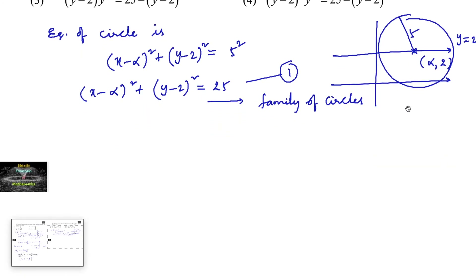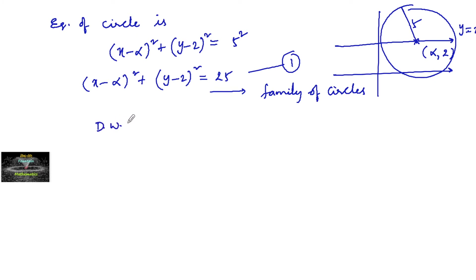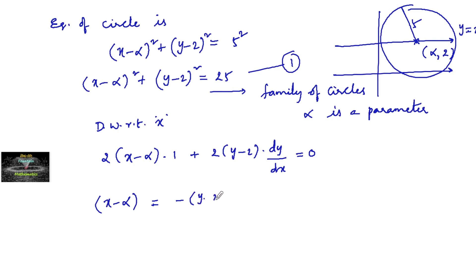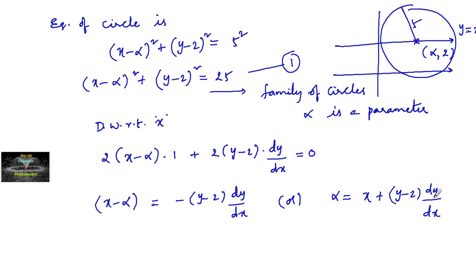Now differentiating with respect to x. Here α is a parameter; since there is one parameter, the differential equation will be of order 1. Differentiating: 2(x − α)·1 + 2(y − 2)·dy/dx = 0, so x − α = −(y − 2)·dy/dx, or α = x + (y − 2)·dy/dx. Call this equation (2).